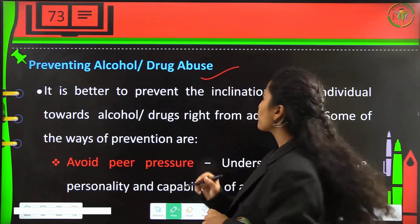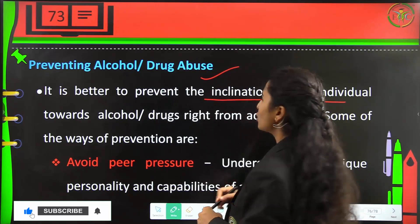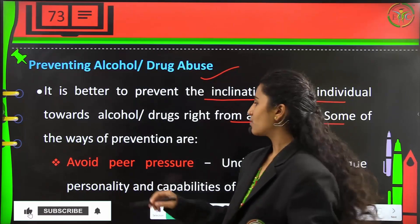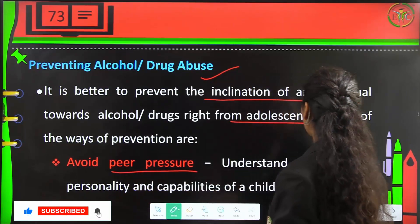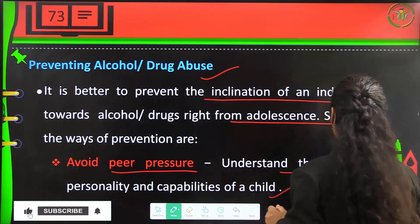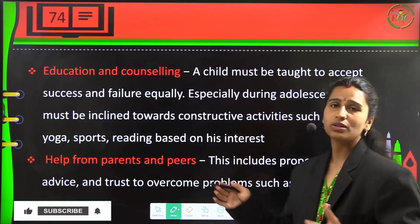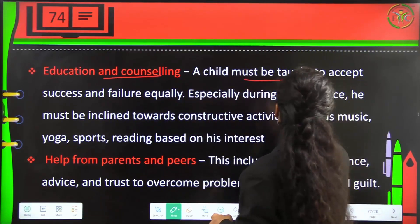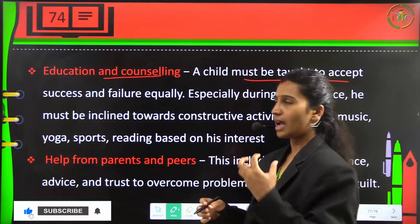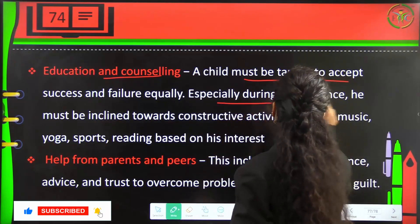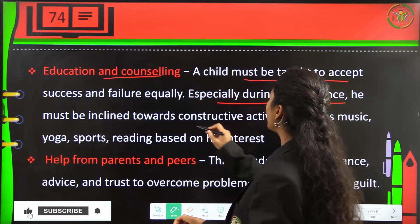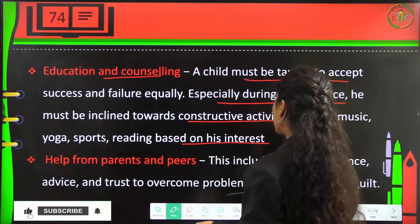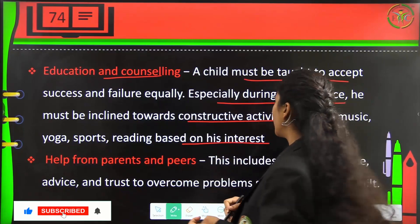To prevent alcohol and drug abuse, it is better to prevent the inclination toward them from adolescence. Ways to do this include avoiding peer pressure, understanding the unique personality and capabilities of a child, education and counselling, and teaching children to accept success and failure equally. Children should be encouraged toward constructive activities like music, yoga, sports, and reading based on their interests.